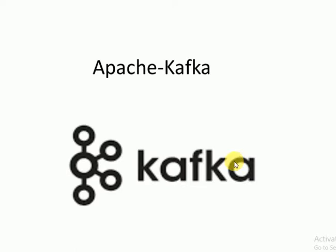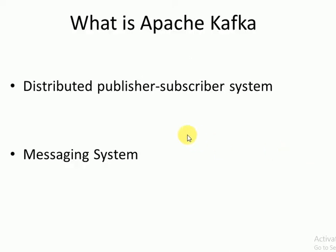In this video I'll explain what Apache Kafka is and its architecture. Kafka is a distributed publisher-subscriber system, or distributed messaging system, that accepts messages from different producers in a streaming fashion and delivers those messages to distributed consumers. That is the main intention of Apache Kafka — a publisher-subscriber or messaging system.